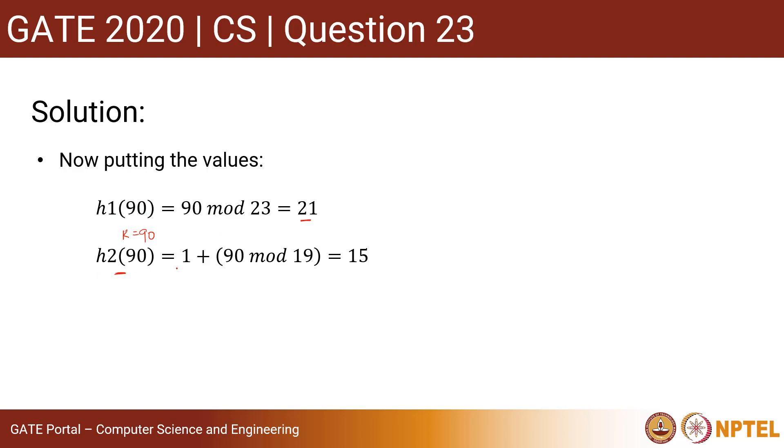Similarly, h2(90) = 1 + (90 mod 19). Remember this was k mod 19. So k value is given as 90, so 90 mod 19 = 15.